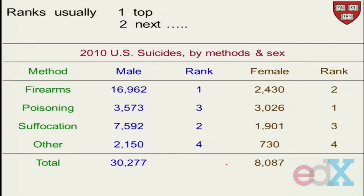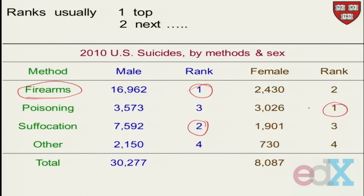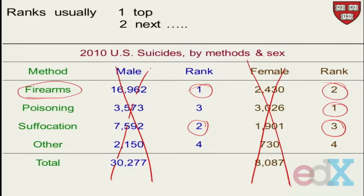What Wilcoxon did is he looked at the ranks. Just to remind you about ranks — here are suicides, the methods of suicide in 2010. For males, the most popular is firearms, and the next most popular is what they used to call strangulation or suffocation — hang yourself. Whereas with women, they prefer poison; poison is the most popular way, firearms is only second, and suffocation is third. We can look at just the ranks and see that there's a qualitative difference.